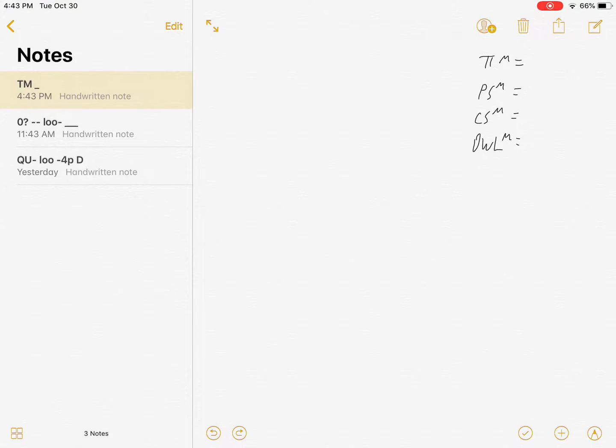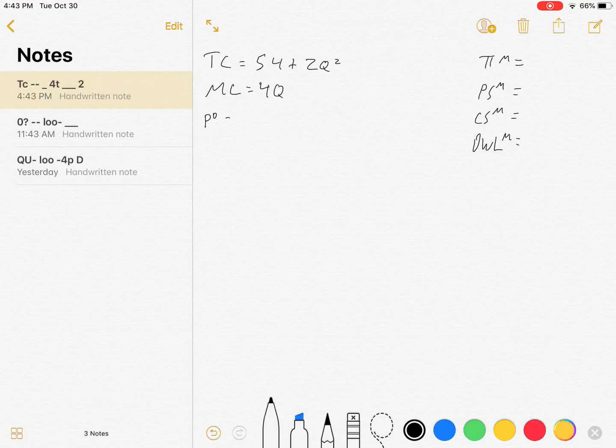There's a few things I'm going to have to give you in this problem. You need to know about your firm's total cost function: TC = 54 + 2Q². Marginal cost from this is just MC = 4Q. Let's say they have an inverse demand curve for their product equal to P = 90 - 1/2 Q.